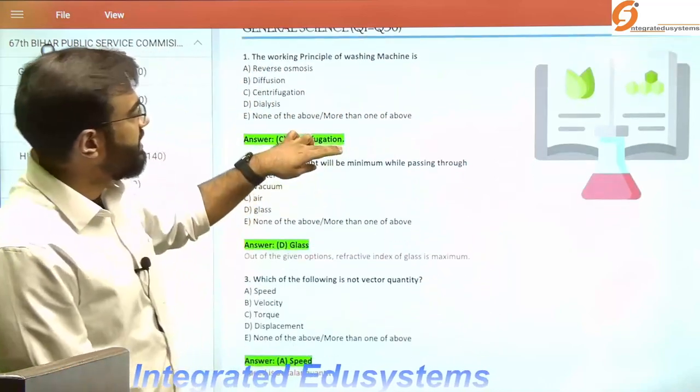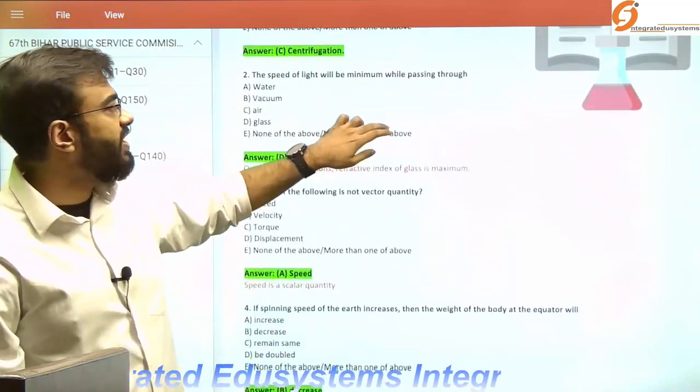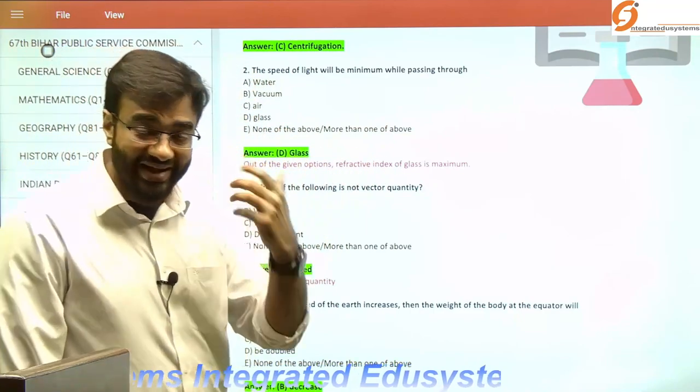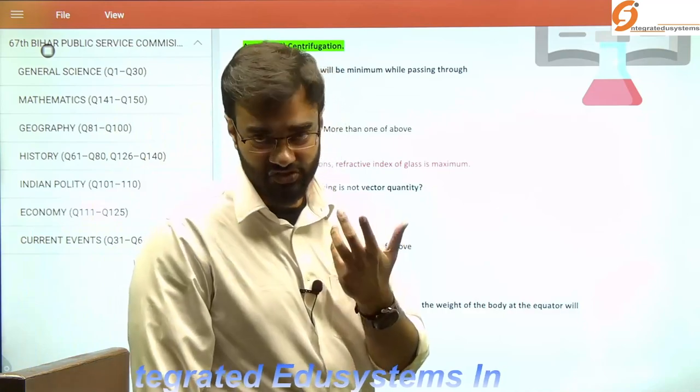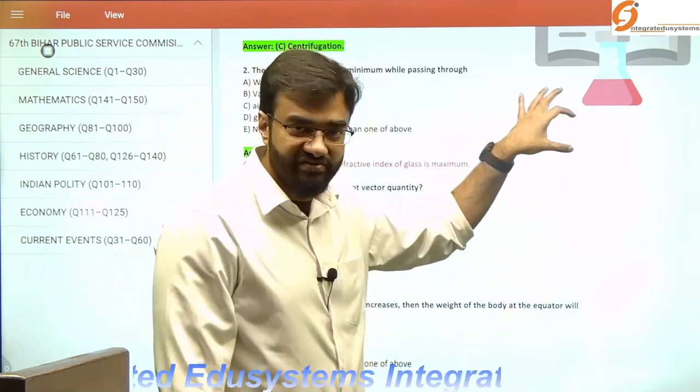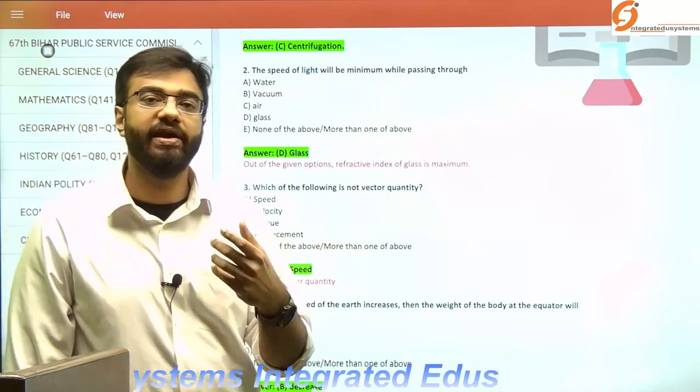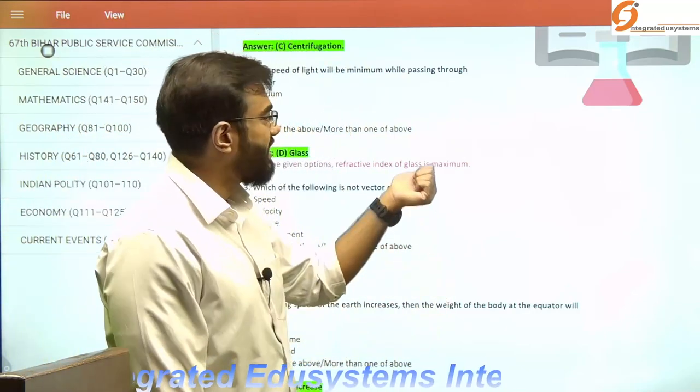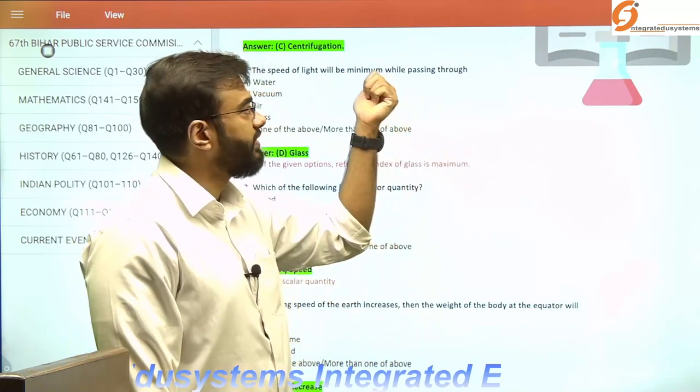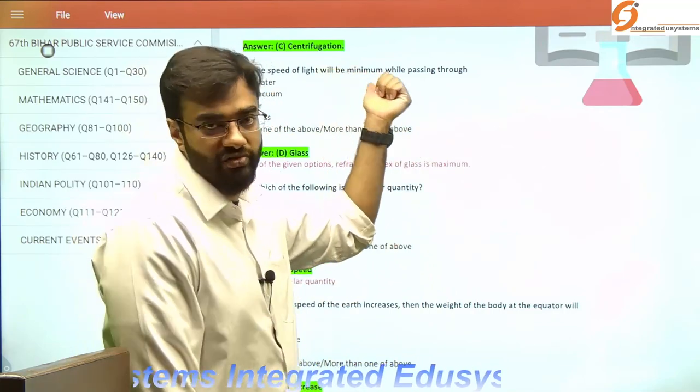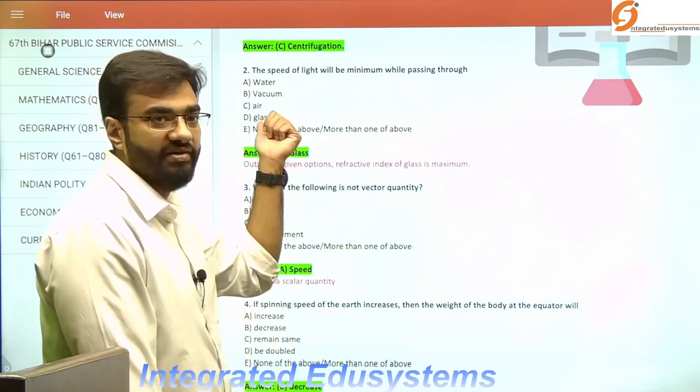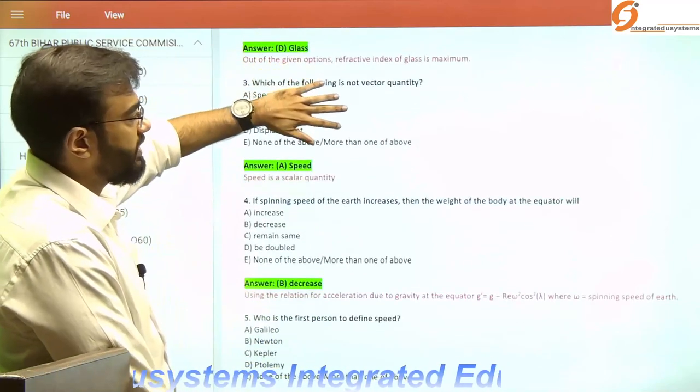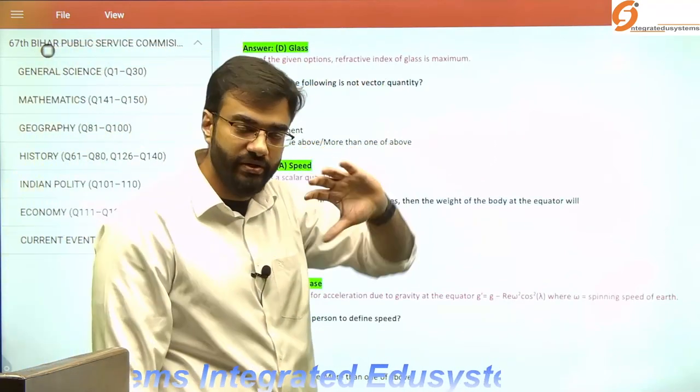The speed of light will be minimum while passing through glass. If you have read about the refractive index in school, higher the refractive index or higher the density of the material, greater will be the bending of light, which affects velocity. Glass is the densest medium out of the four options.